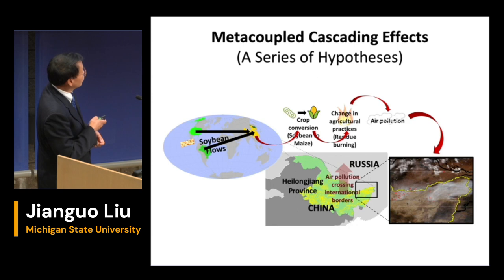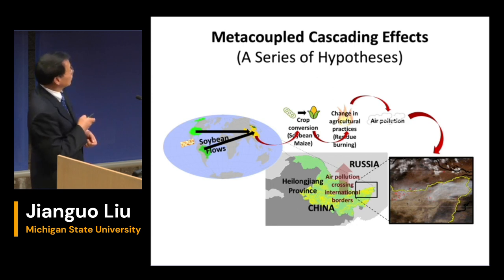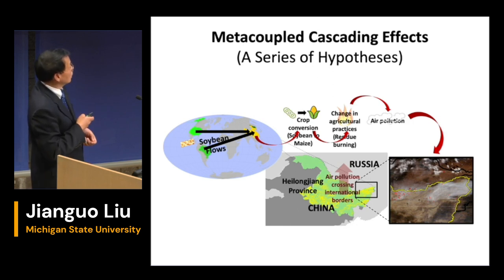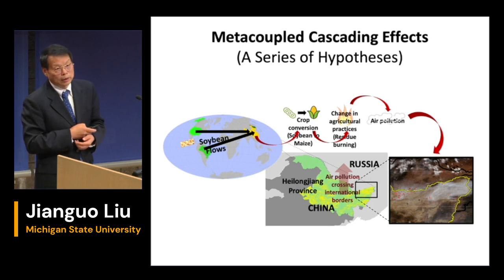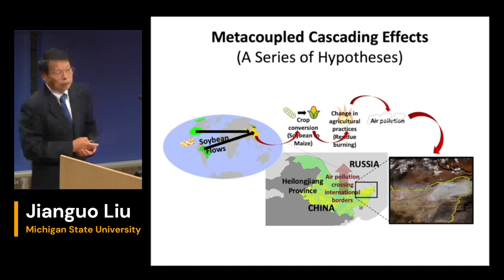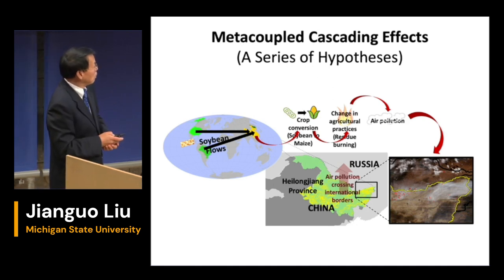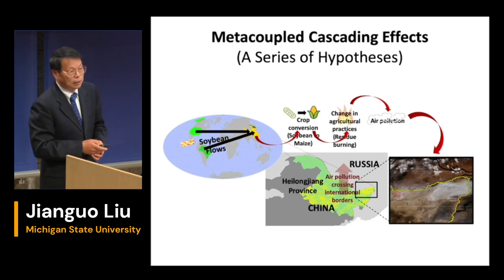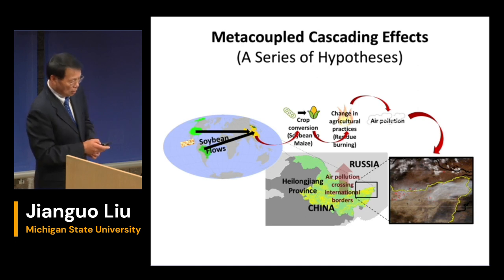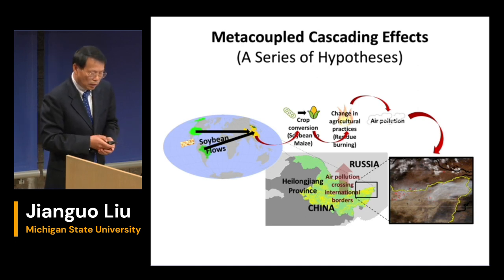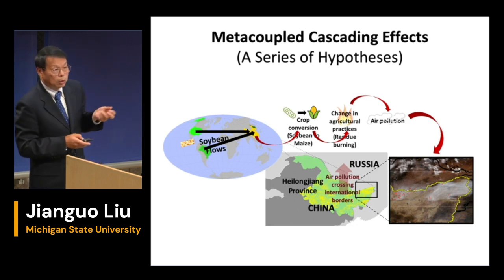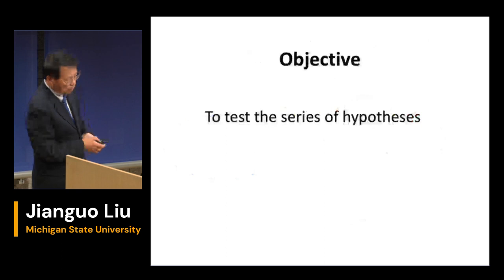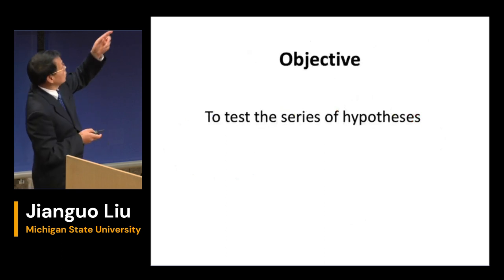This air pollution moves to the neighboring provinces in Russia. There are several provinces in Russia next to Heilongjiang province, and the air pollutants cross the international border. This actually caused international problems — the Russian government made an official protest of China's air pollution problem. This is the hypothesis we proposed, and the objective of this study is to test this series of hypotheses.